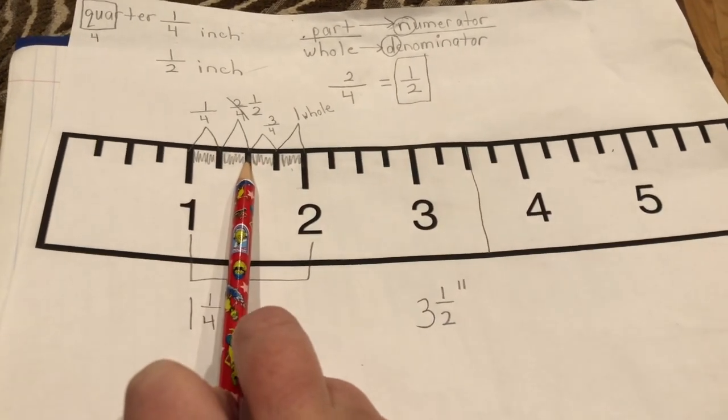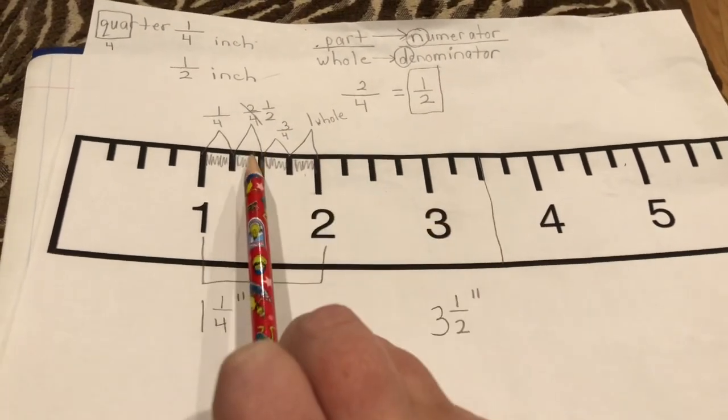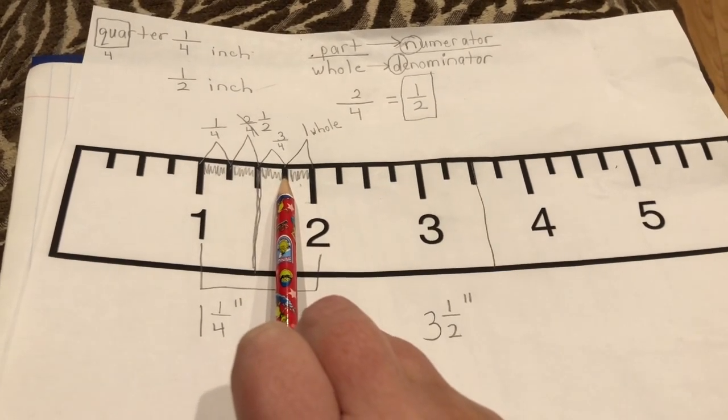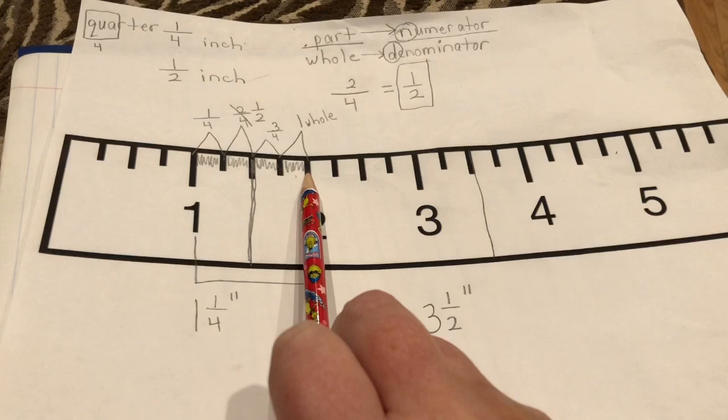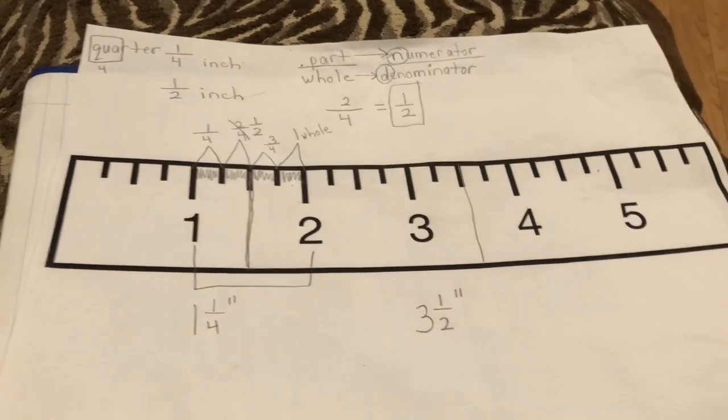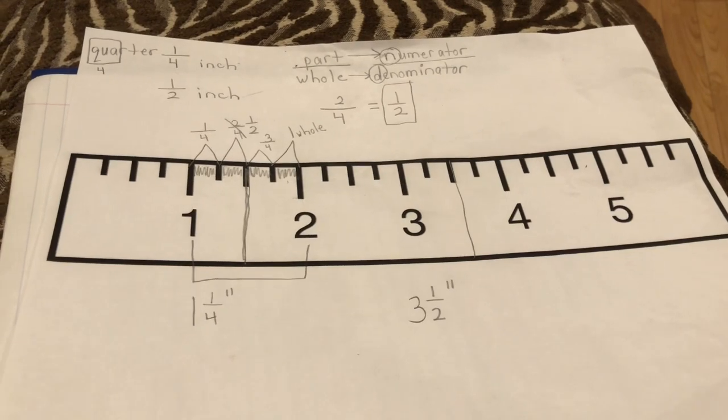One and two quarters, which we call a half, one and three quarters, and then we've gone all the way up to two whole inches. And we'll be practicing this more on our Saxon worksheets.